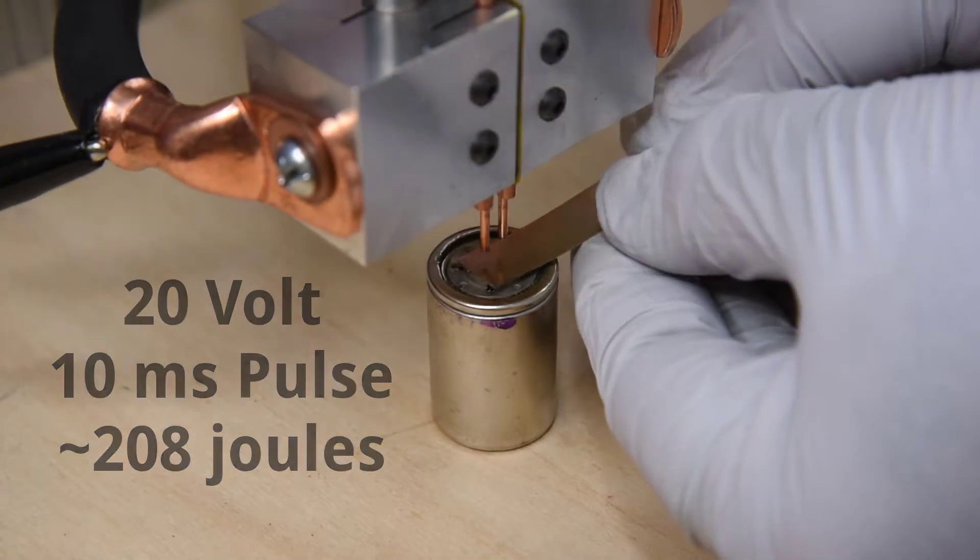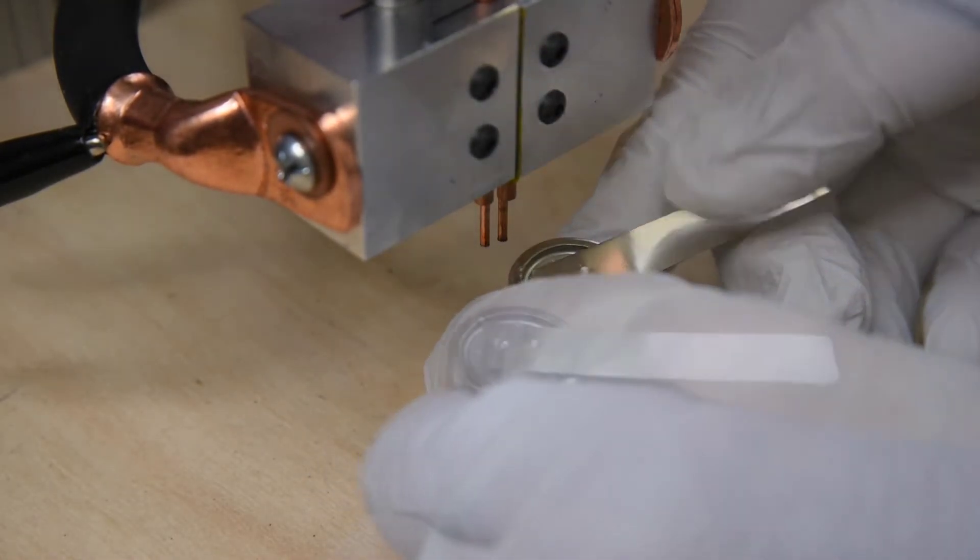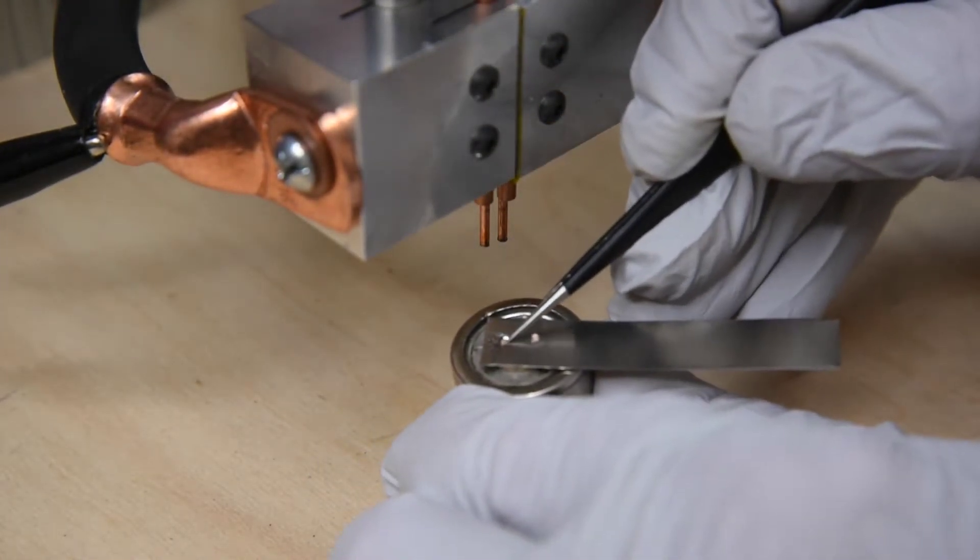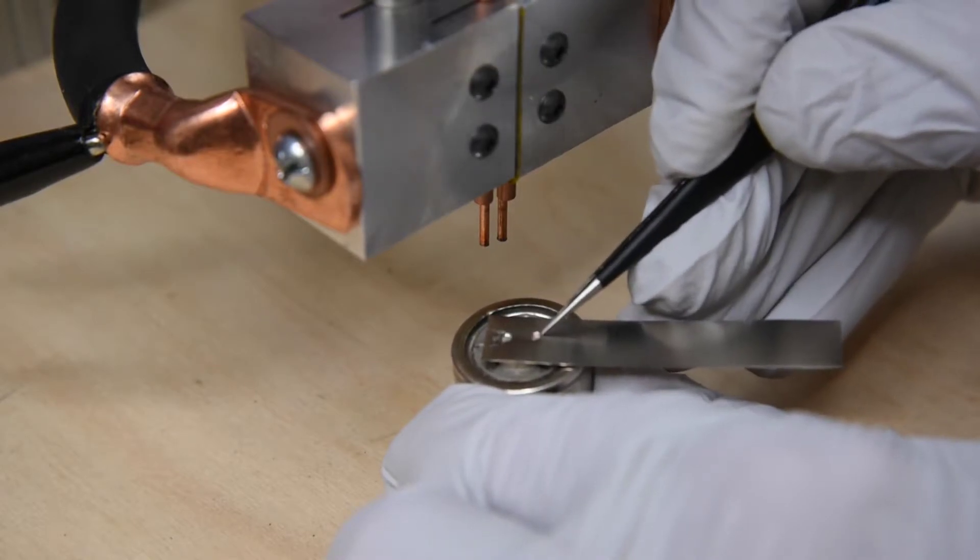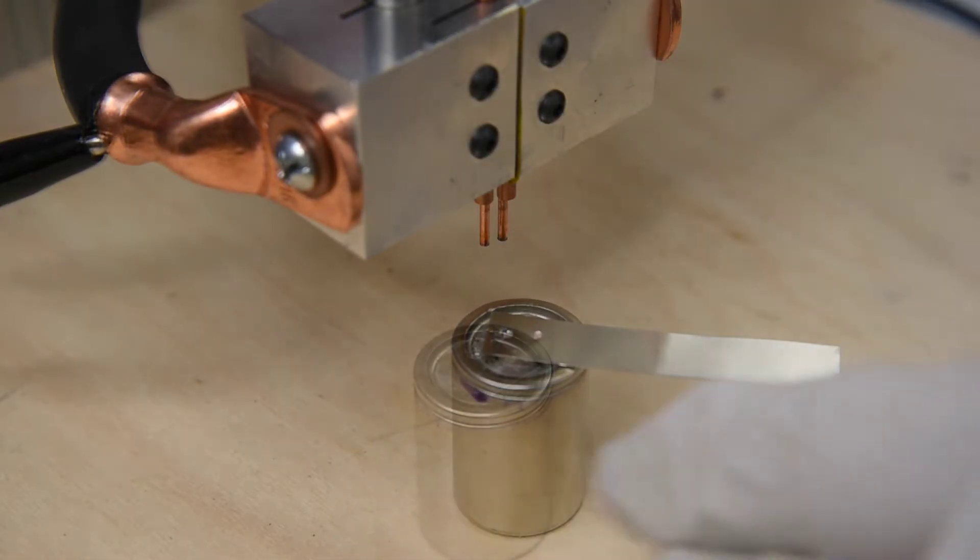Just shy of 210 joules is a little too much. I'm starting to get a bit of nickel melt and I'm losing quite a bit of tip as well. I'm starting to think the 1/16th inch diameter tips may top out around 200 joules.